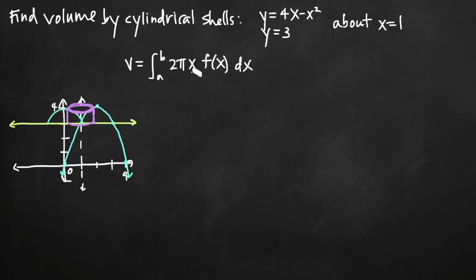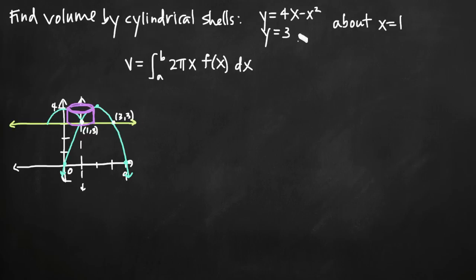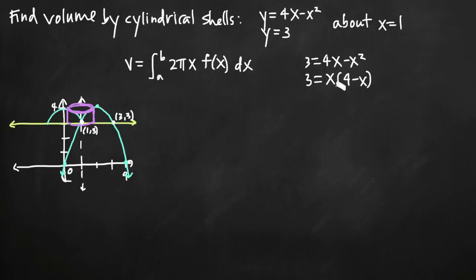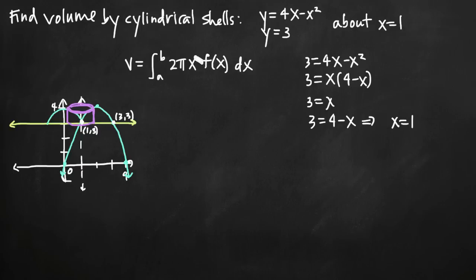For our formula we need a couple of things. First, we need our limits of integration, a and b. We know that our functions intersect at the points (1, 3) and (3, 3), so our limits of integration are 1 and 3. We can verify this by setting the functions equal: 3 equals 4x minus x squared, which factors to give x equals 1 and x equals 3. Then we need x, which is the radius, as we saw from the chart.